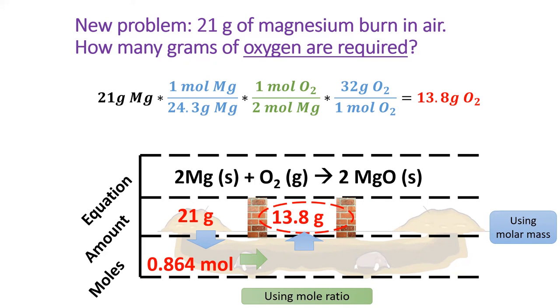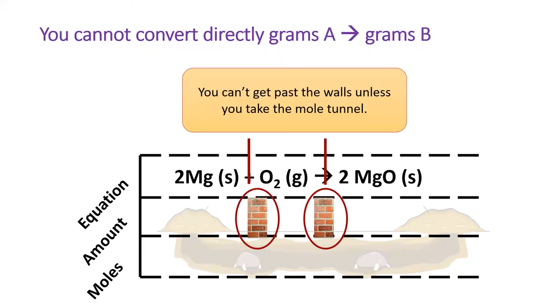Lastly, use the molar mass of oxygen to convert to grams of oxygen. Remember, oxygen is a diatomic molecule. Its molar mass is 32 grams per mole. And with that, you are a true mole chemist. Remember, you cannot convert directly from grams to grams. You have to convert through the mole tunnel.